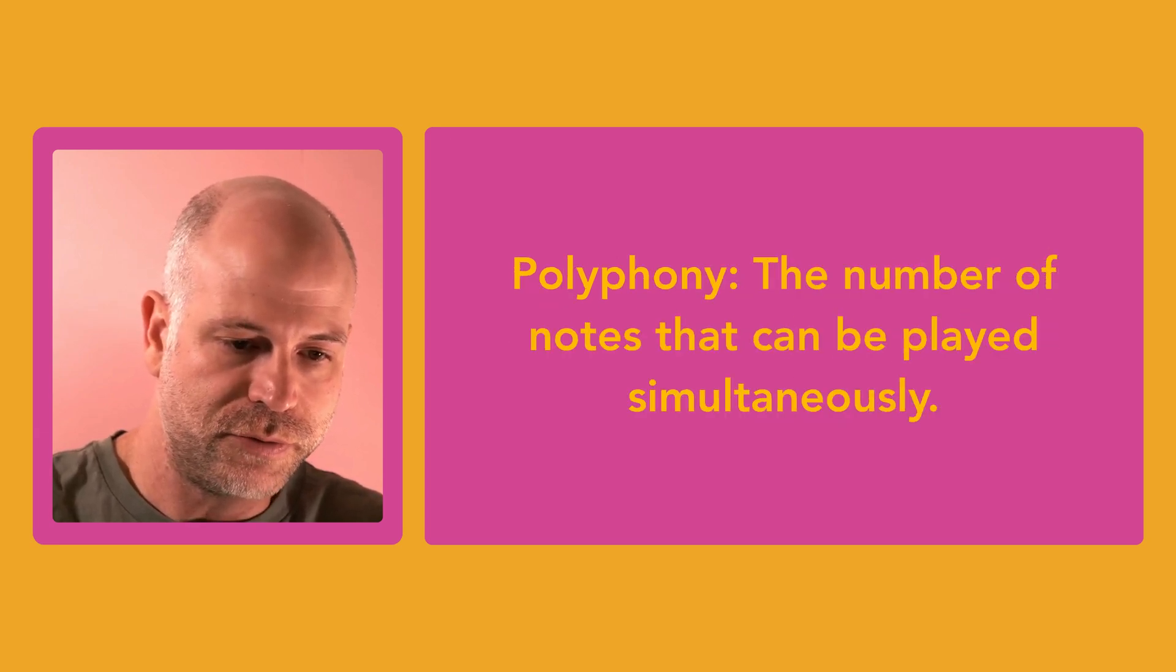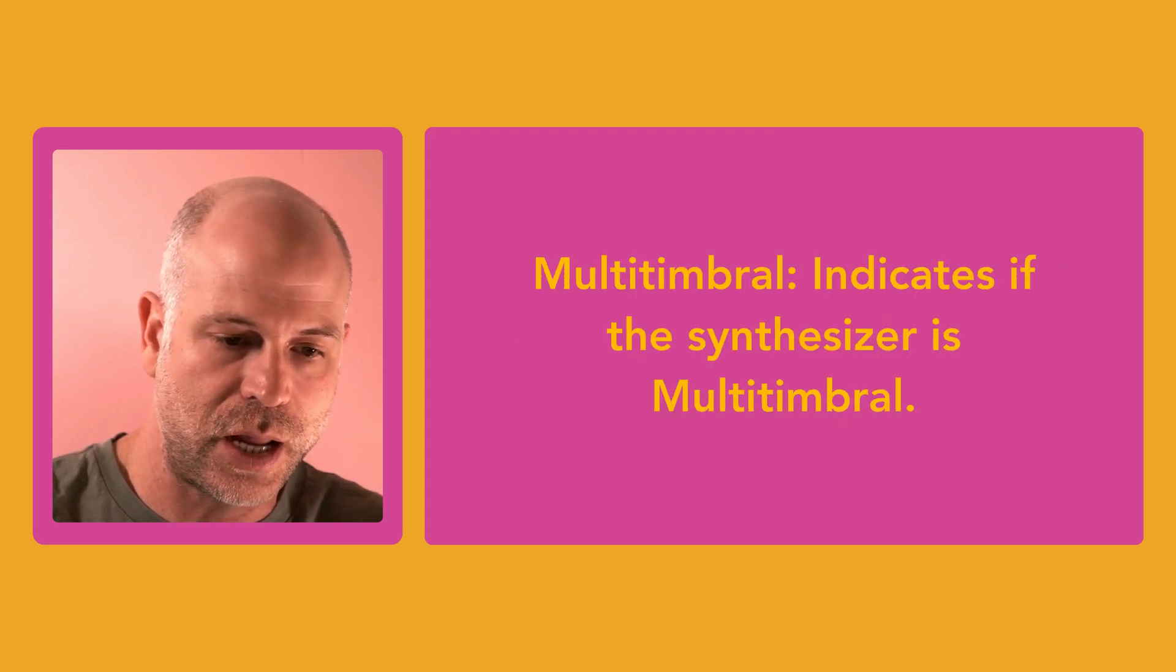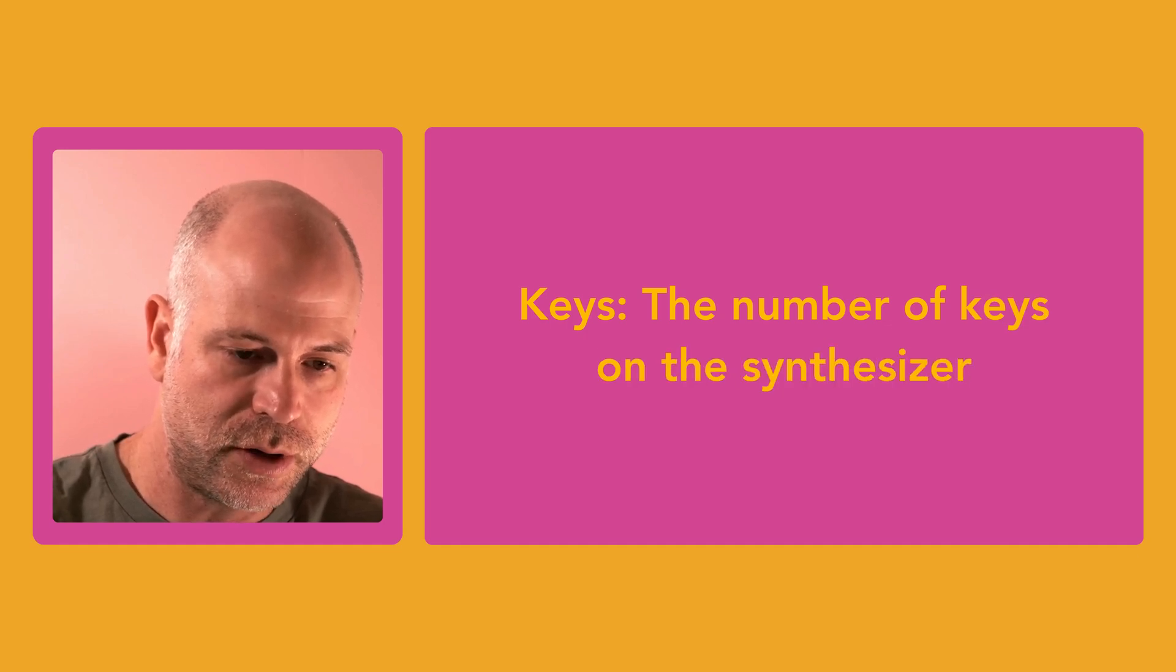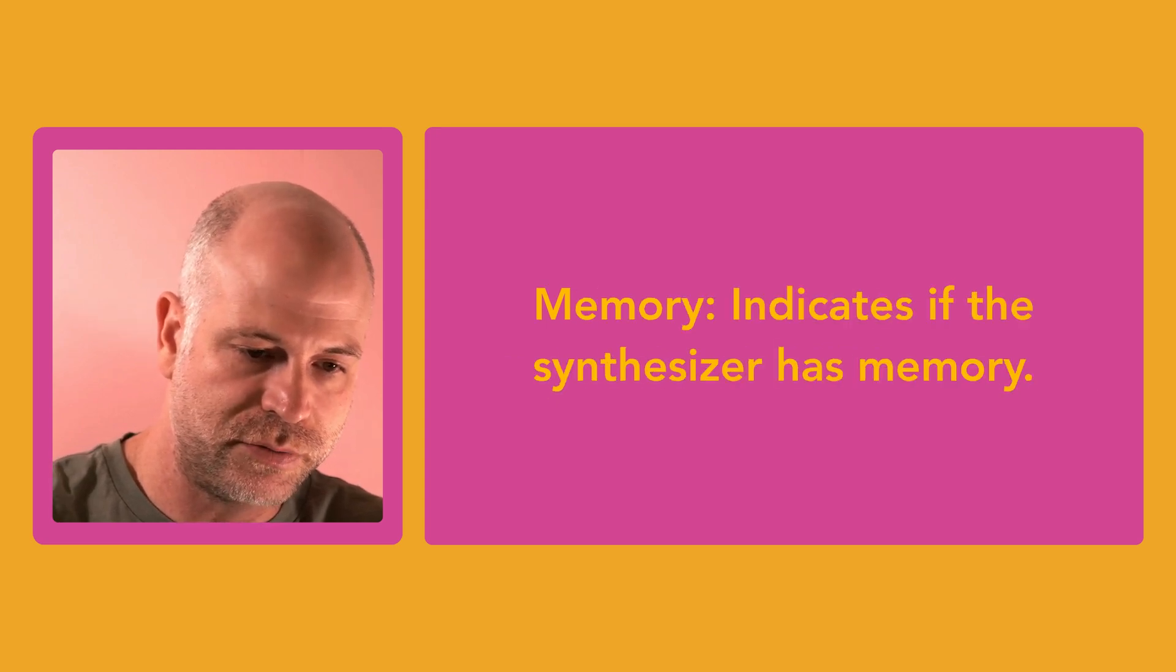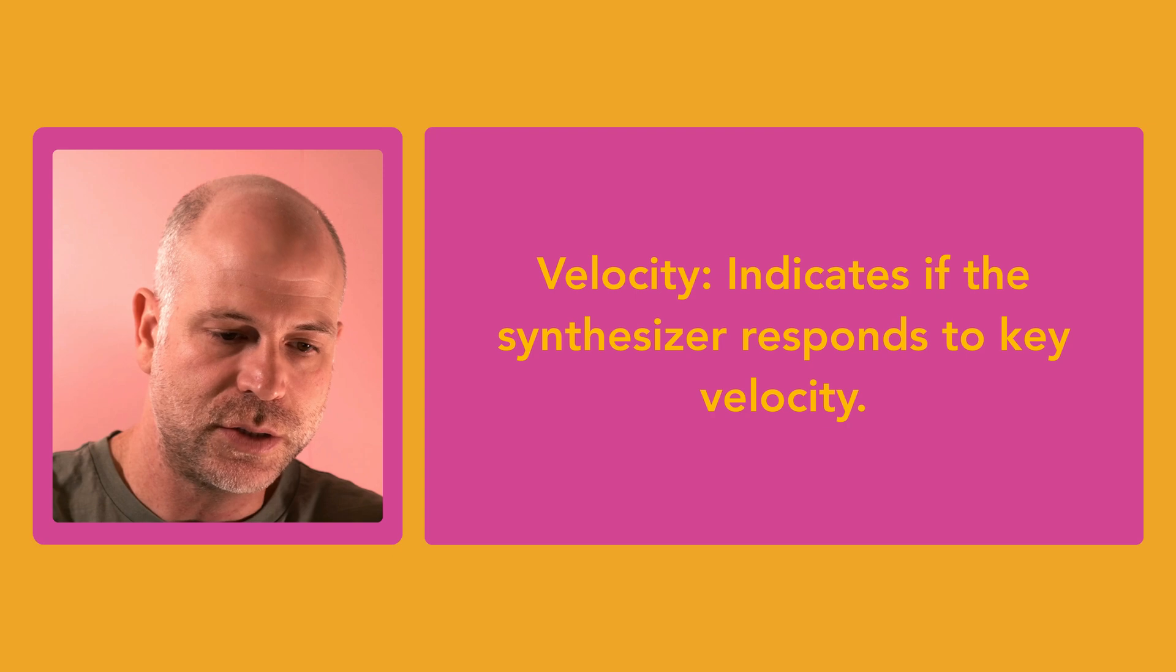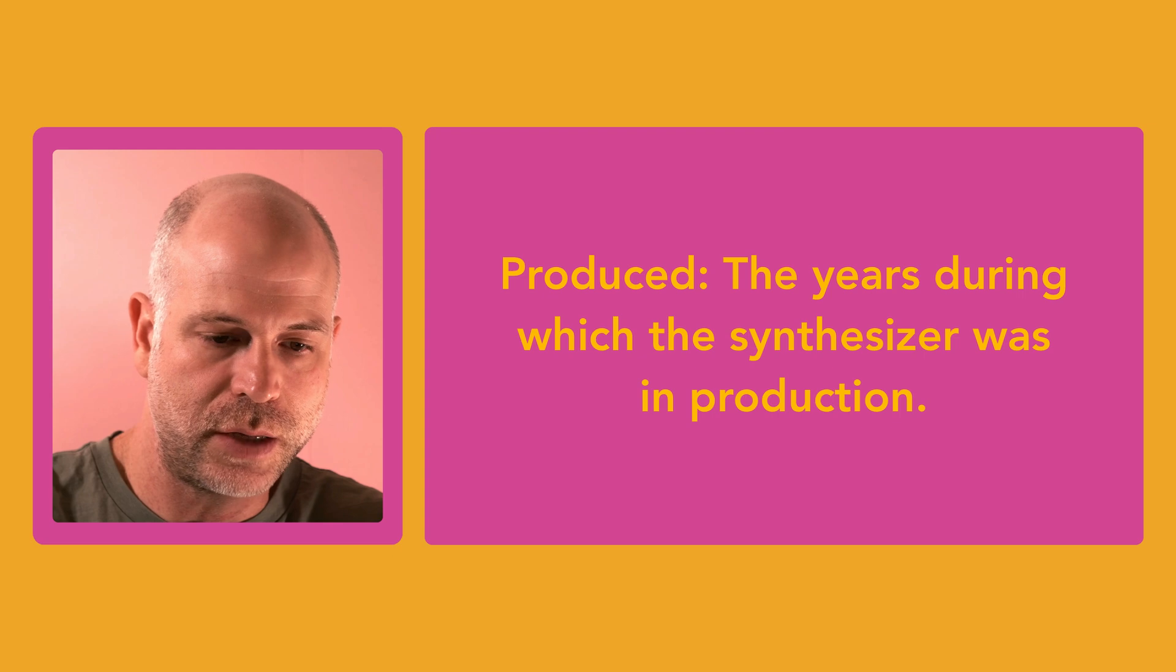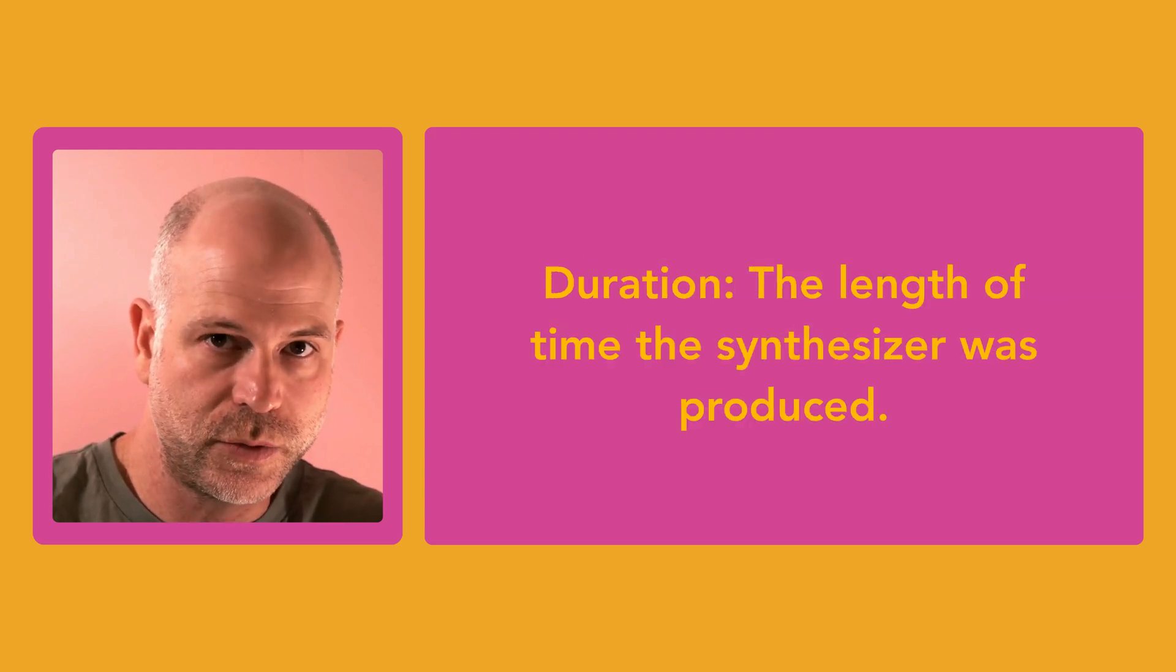Polyphony would indicate the polyphony count. Oscillators, the oscillator count. Multi-timbral would indicate if it's a multi-timbral synth and how many parts it can play. Keys would be the key number on the keyboard, if applicable. MIDI would indicate if the synth supports MIDI or not. Memory would indicate if the synth has memory on board. Key type would indicate the kind of keys. Velocity indicates if the synth responds to velocity or not, and aftertouch indicates if it supports aftertouch. Produced would be the years during which the synth was in production. Duration would be the duration of the production.